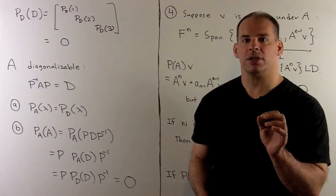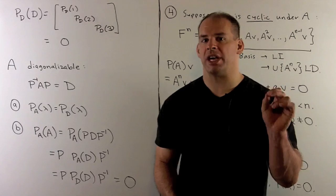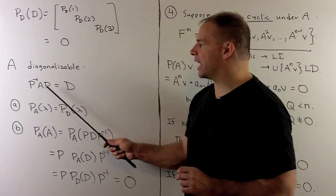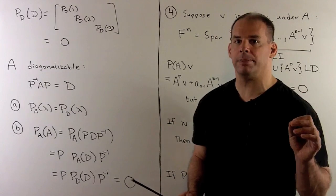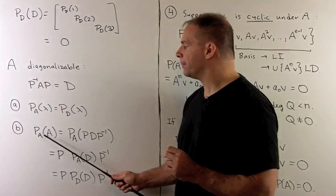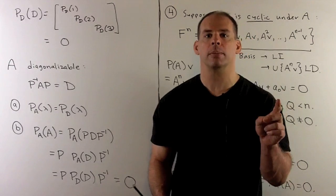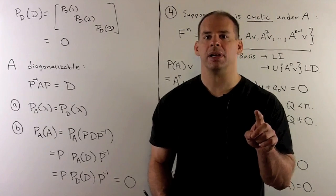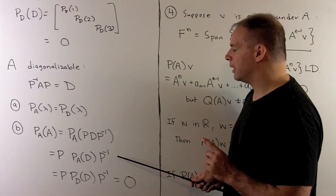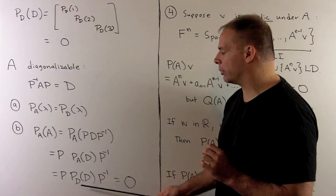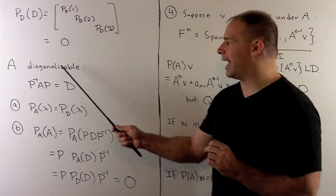We could use the diagonal case to prove Cayley-Hamilton when A is diagonalizable — meaning there's a change of basis P such that P-inverse AP equals some diagonal matrix D. The characteristic polynomial of A equals the characteristic polynomial of D. Applying the characteristic polynomial of A to itself, we replace A with PDP-inverse; taking PDP-inverse to any power, the PP-inverses collapse, leaving P times D to a power times P-inverse. We pull the P's to the outside, leaving the characteristic polynomial of D applied to D, which is zero. This gives Cayley-Hamilton when A is diagonalizable.